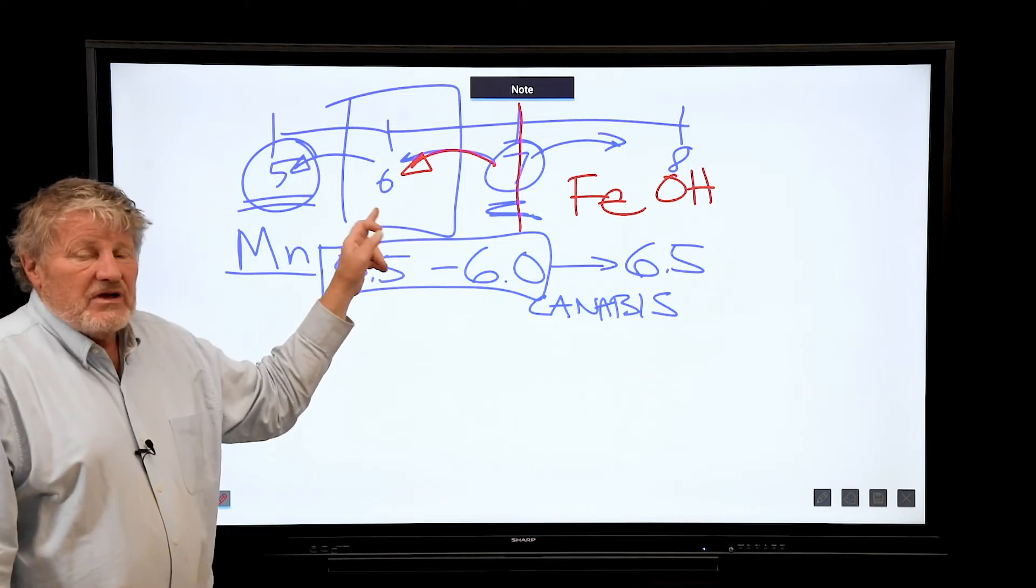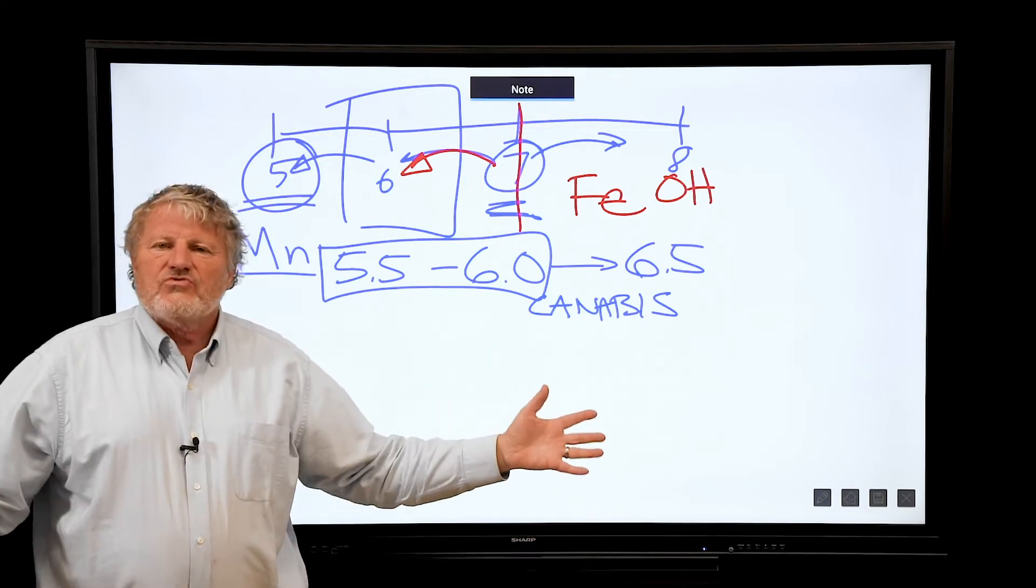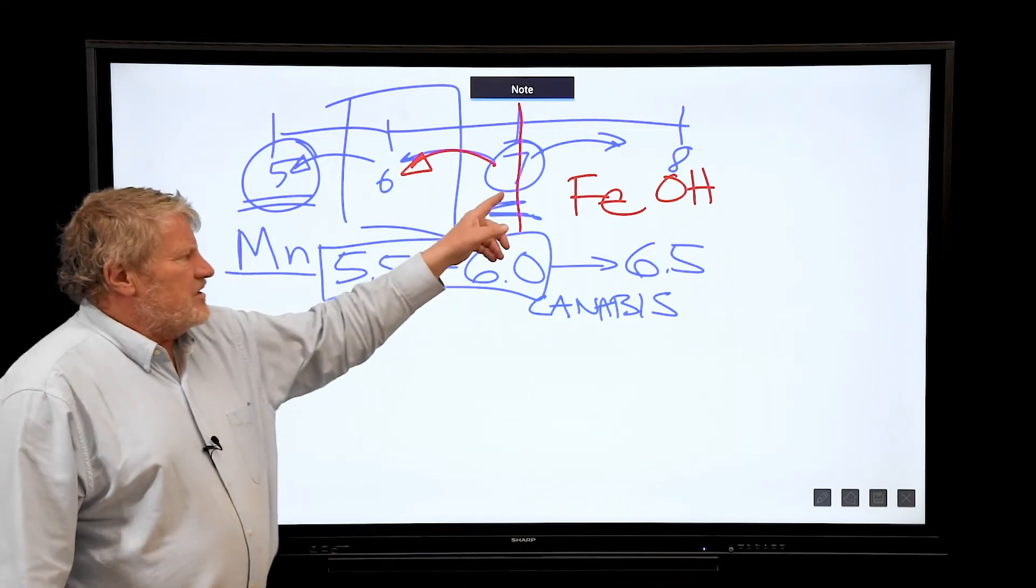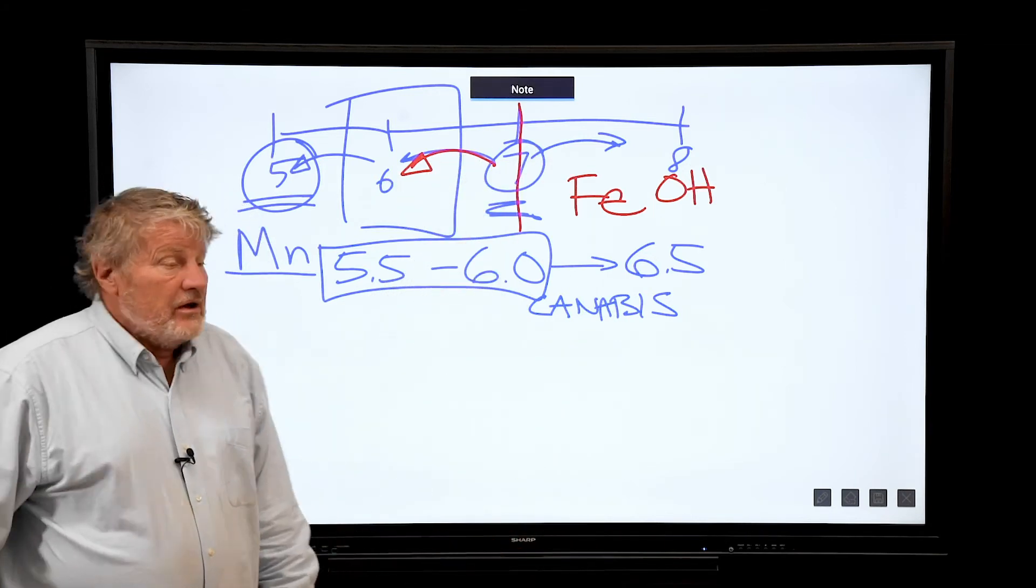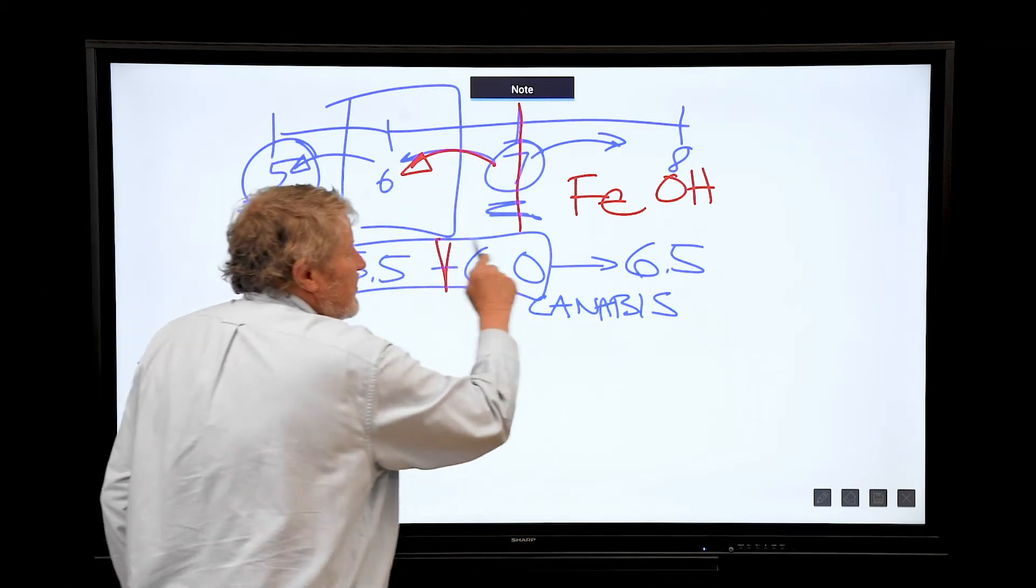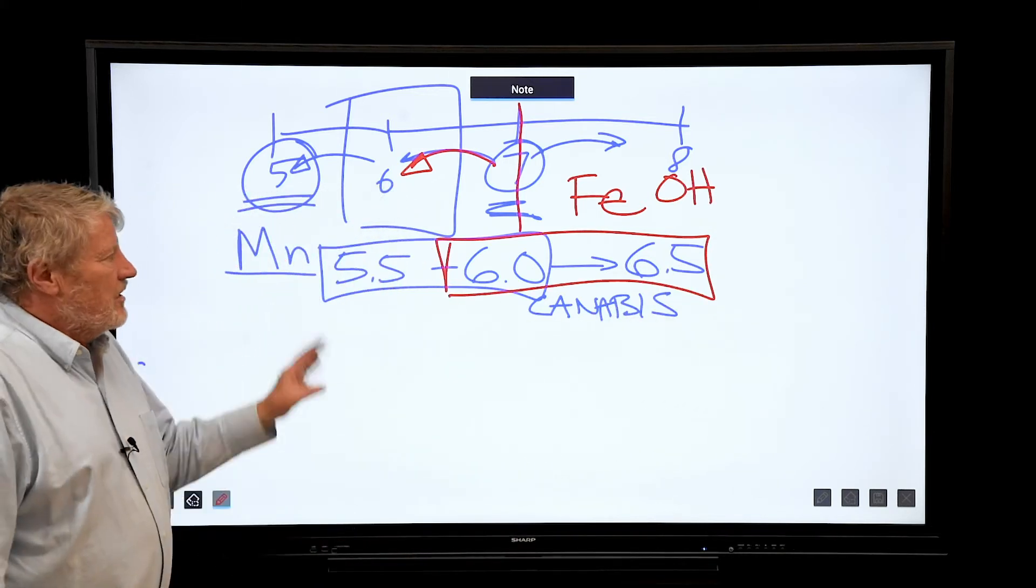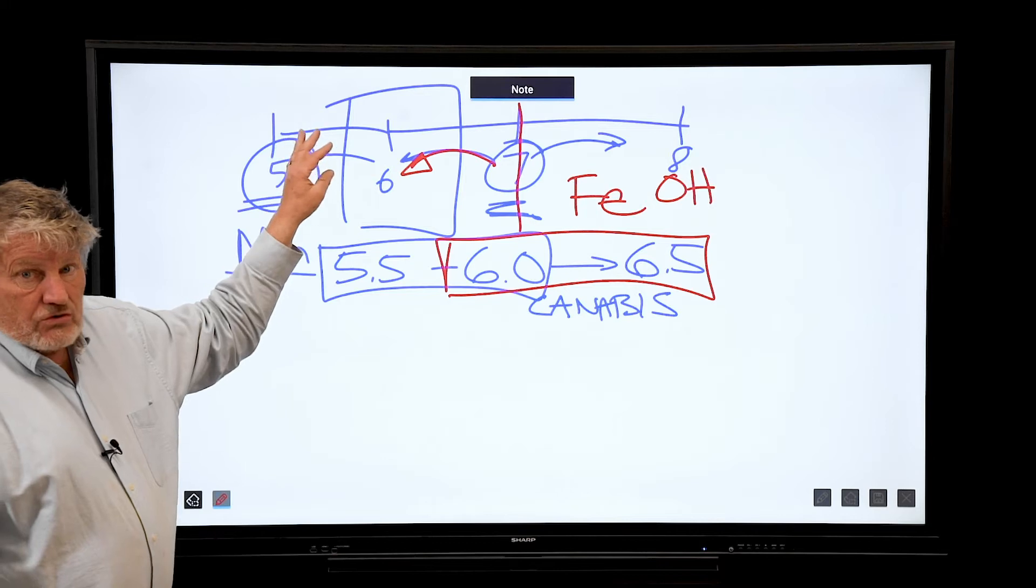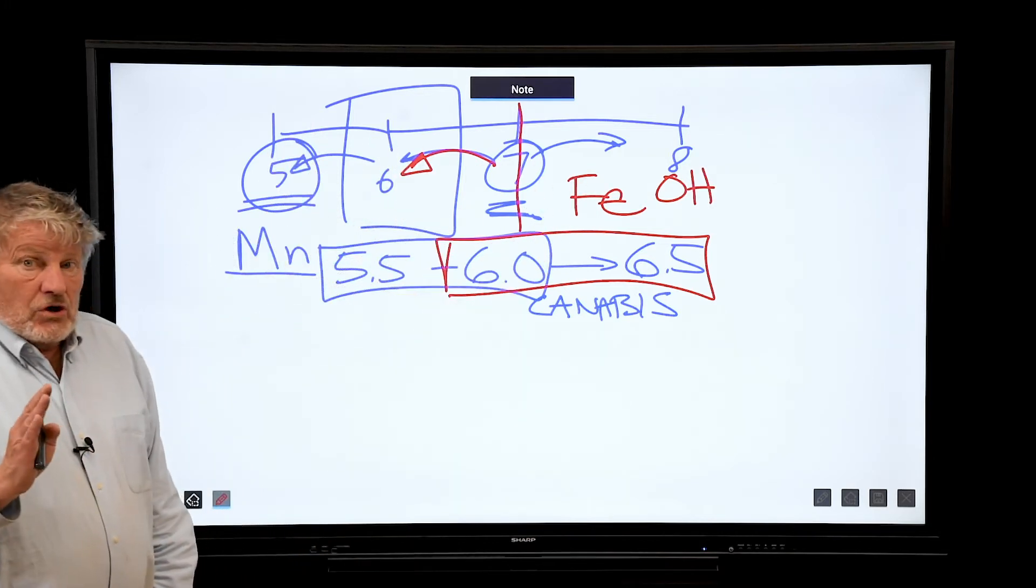But cannabis is one of the world's record crops for getting iron. We've had pHs above 7 and it still gets iron, no problem at all. So that's why I say we like to see a slightly higher pH to minimize the chance of micronutrient toxicity, and it still gets plenty of iron.